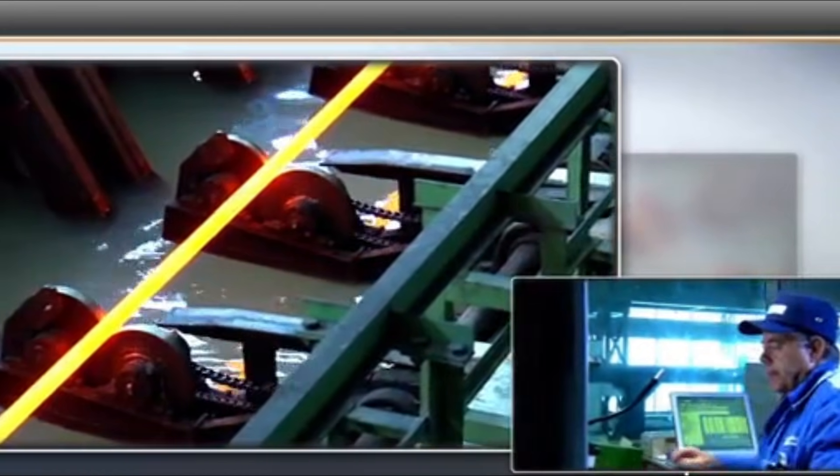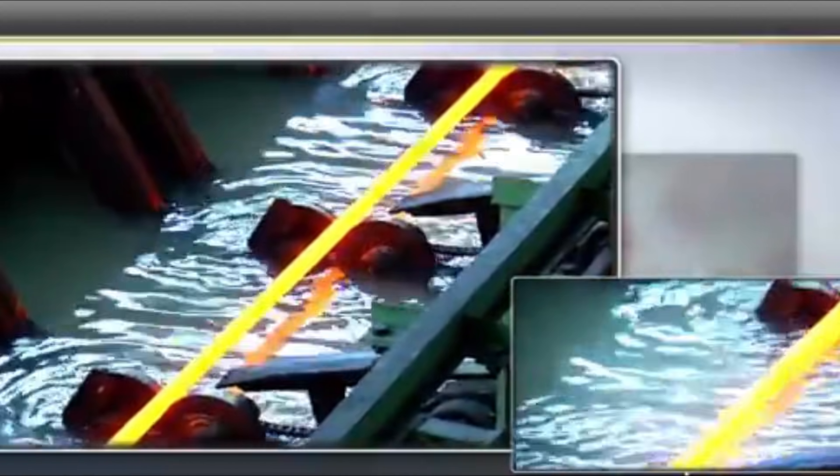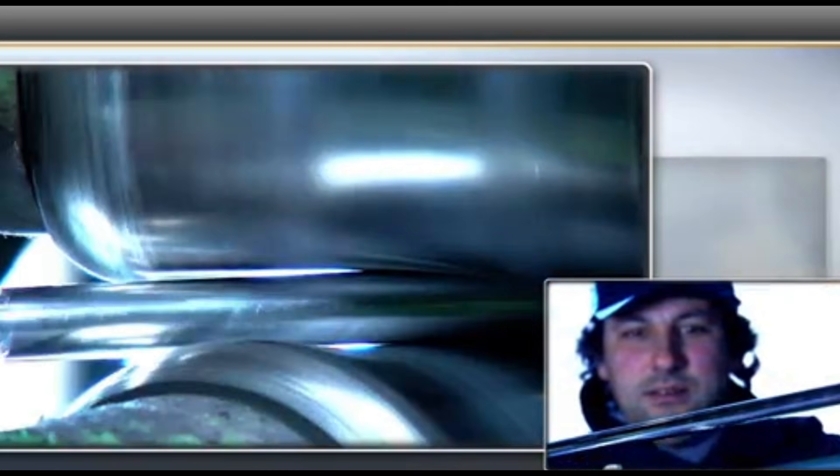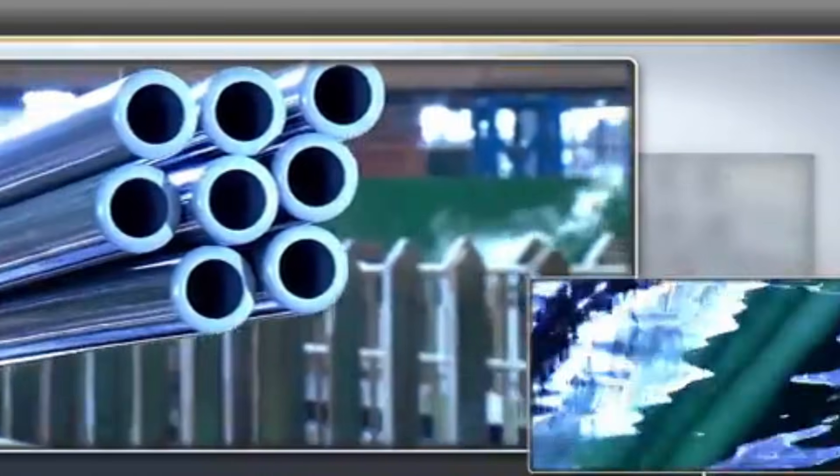Following extrusion, the extruded tubes are rapidly cooled to suppress unwanted precipitation and to stabilize the metallic microstructure. The extruded tubes are then straightened and subjected to chemical pickling to remove scales and prepare the surfaces for subsequent cold working stages.